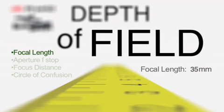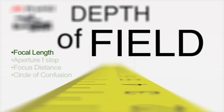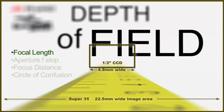Shorter focal lengths allow for wider angles of view, but they also deepen the depth of field. This is where the size of the imaging sensor comes into play. This simulation is currently set for a 35mm focal length. In the Super 35mm format, this would be considered a normal lens with an angle of view close to that of the human eye. Now what happens if we use this same focal length on a 1/3-inch camera? The depth of field characteristics haven't changed, only the viewable area. The 1/3-inch CCD sensor is so much smaller than the Super 35mm gate that our wide shot has now become telephoto.